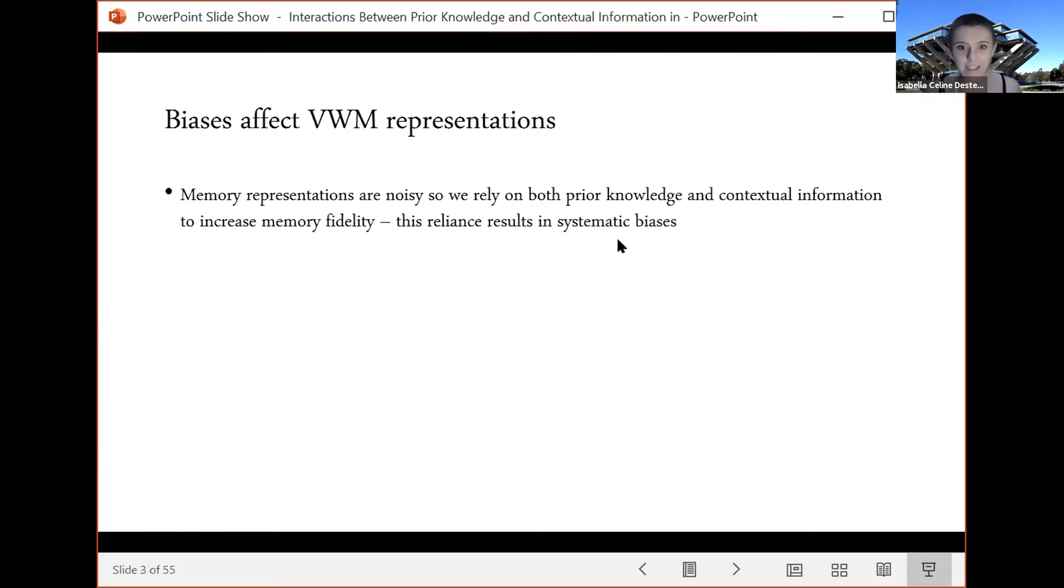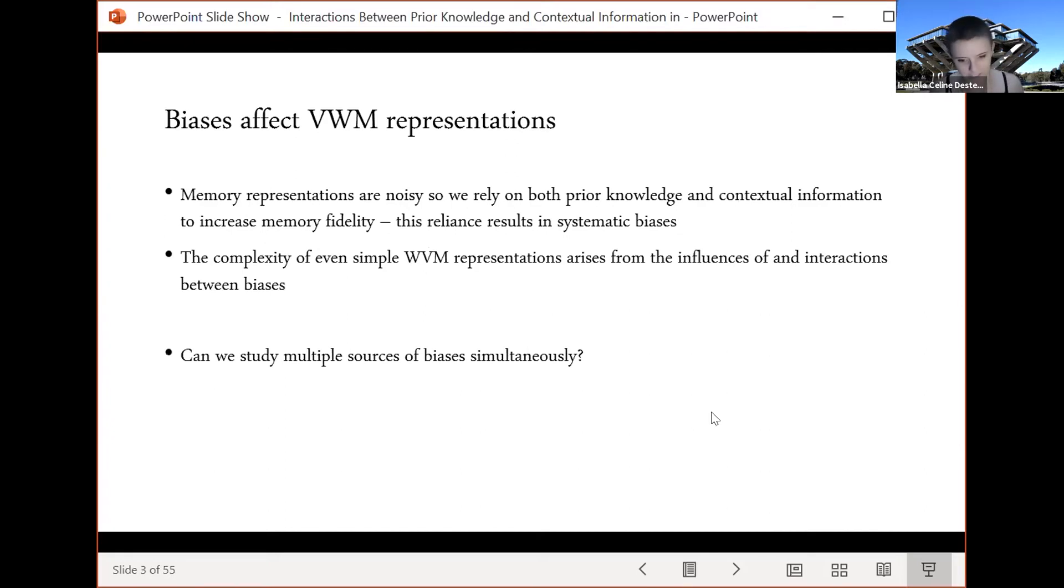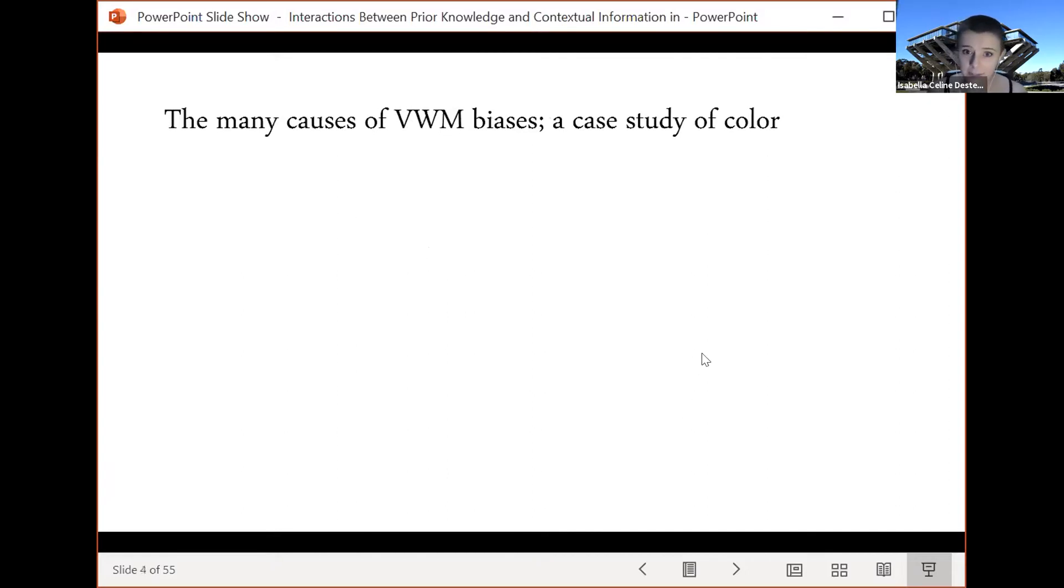Since memory is inherently noisy, both prior knowledge and contextual information increase memory fidelity. This reliance results in systematic biases and the complexity of even simple visual working memory representations arises from influences and interactions between these biases. It's difficult to study these multiple sources of biases at the same time for a couple of reasons. One is because the size of the biases tends to be relatively small and the other is that the uncertainty associated with single trial responses makes delineating sources very difficult. In this set of studies I'm going to use color as a case study to look at the interactions between visual working memory biases because color has very many well-known long-term and short-term biases.